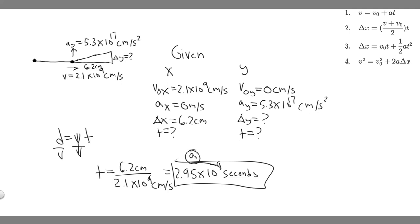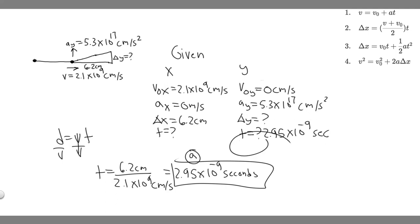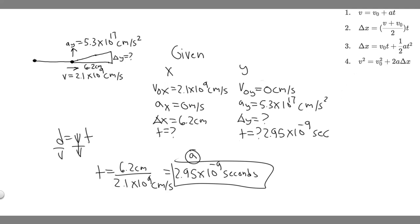Notice what we just solved for — the time: 2.95 times 10 to the minus 9 seconds. Now we're trying to find how far in the y the electron travels while it covers that 6.2 centimeters horizontally. The key is that time is the same for both x and y. So we now have three kinematic variables in the y — v sub 0y, a sub y, and t — which means we can solve for delta y.